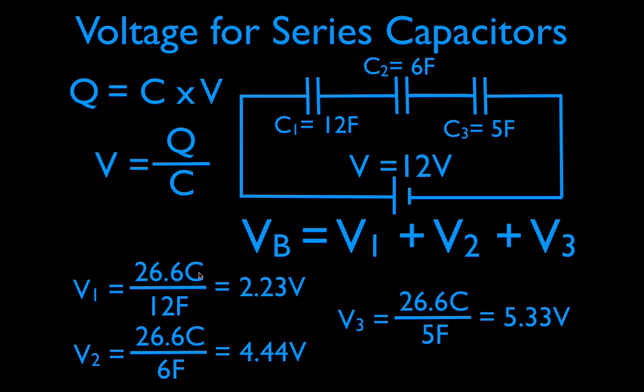Now, we said at the very beginning of the video, a long time ago, that the sum of the voltage drops, the sum of the potential differences, has to equal the voltage of the battery. And let's just see. Do that 2.2 plus... And you're right, it does. Those three voltage drops, those three potential differences, equal the potential gain of the battery, 12 volts.